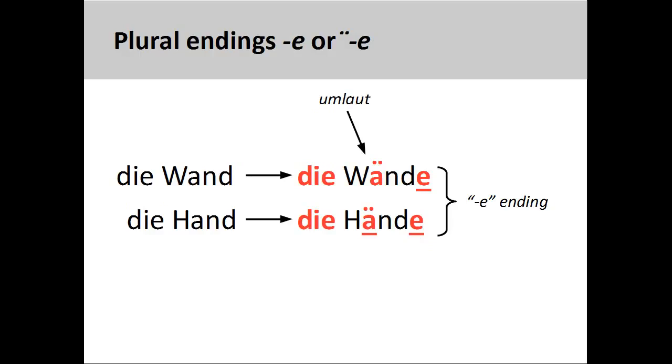A few feminine nouns having only one syllable, such as Hand, hand, and Wand, wall, also add an -e plural ending and an umlaut, Hände und Wände.